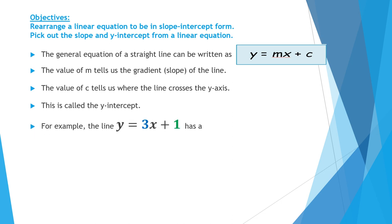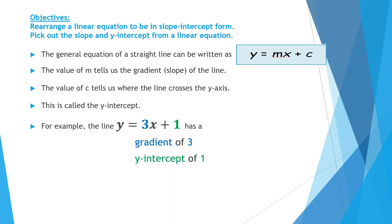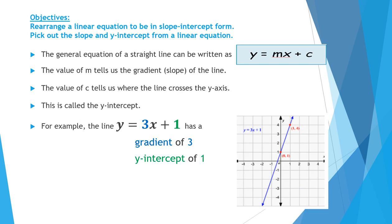For example, in the equation y equals 3x plus 1, the number 3 is the coefficient of x, which means 3 is the gradient. The number 1 is the constant number, so 1 is the y-intercept. Look at the graph — you can see that the line is passing through 1 at the y-intercept on the y-axis.